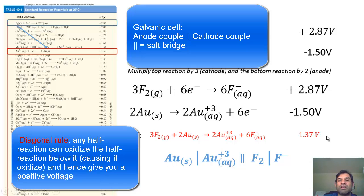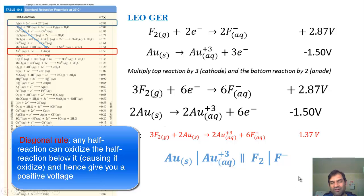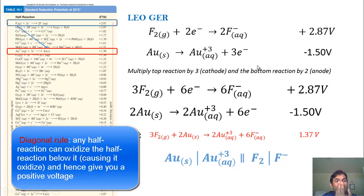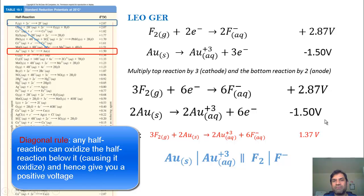So what is the diagonal rule? We have a positive voltage of 1.37 volts, meaning this is a fully functional battery. Looking at the positions on the table: F2 is causing Au solid to flip and become an oxidation reaction, still maintaining a positive voltage. Essentially, F2 can cause anything below it on the table to flip and still maintain a positive voltage — still yield a fully functional battery — defined as anything that gives a positive voltage.